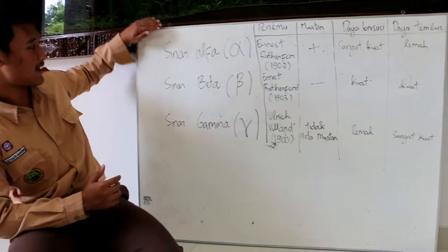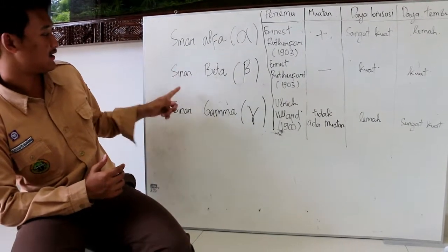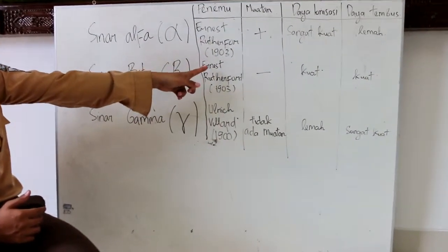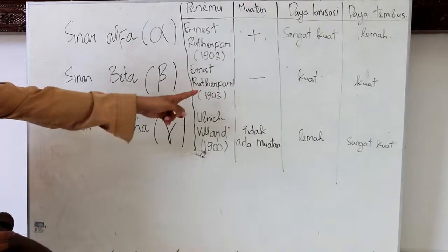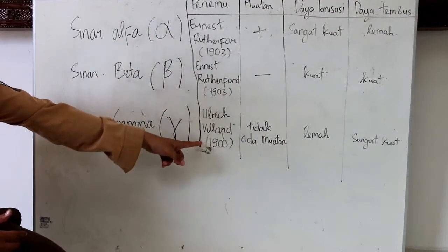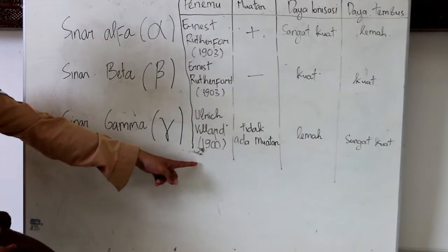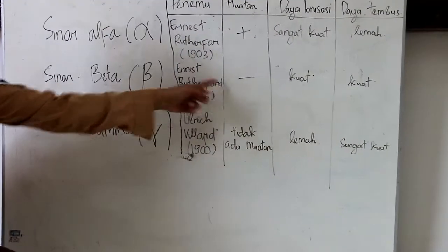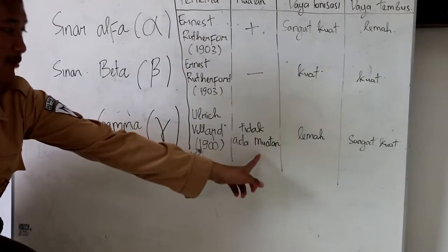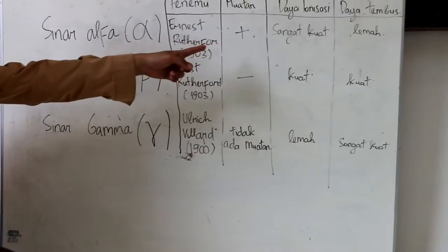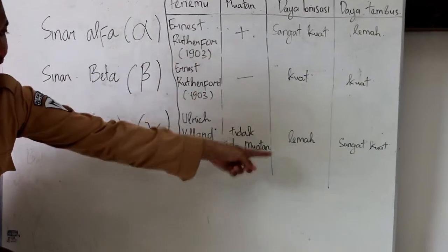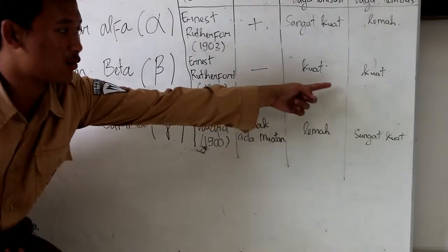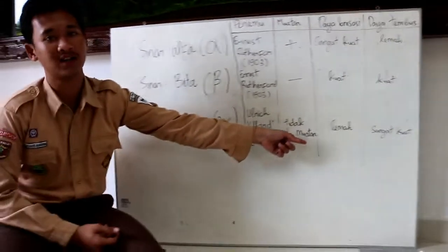Ini tabelnya: sinar alpha, sinar beta, dan sinar gamma. Ada penemunya — Rutherford pada tahun 1903, sinar beta juga pada 1903, dan Ulrich Vilard pada tahun 1900. Muatannya positif untuk sinar alpha, negatif untuk sinar beta, sinar gamma tidak ada muatan. Daya ionisasinya sangat kuat, kuat, dan lemah. Daya tebusnya untuk sinar alpha lemah, sinar beta kuat, sinar gamma sangat kuat.